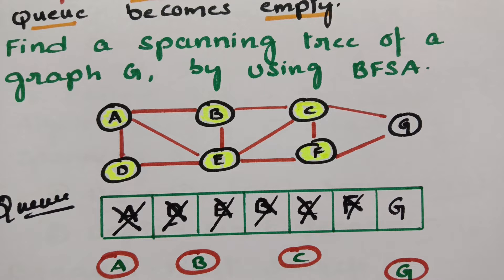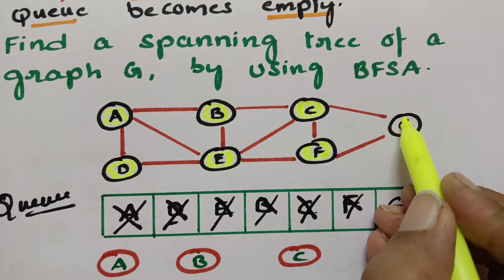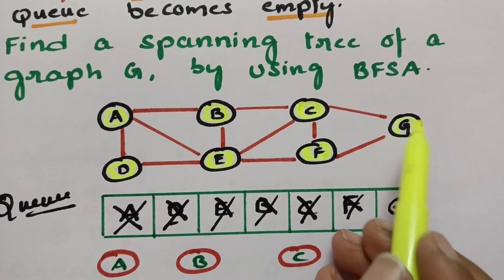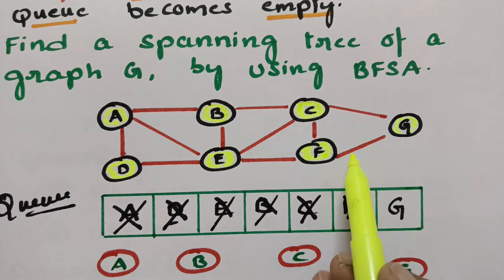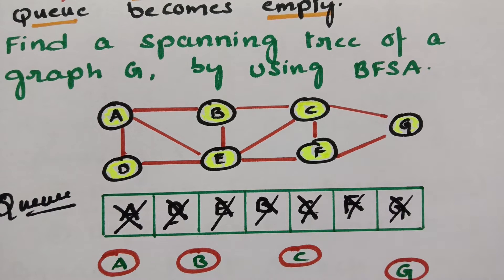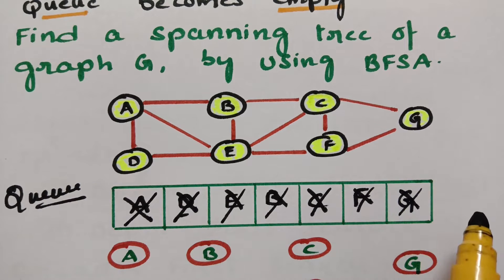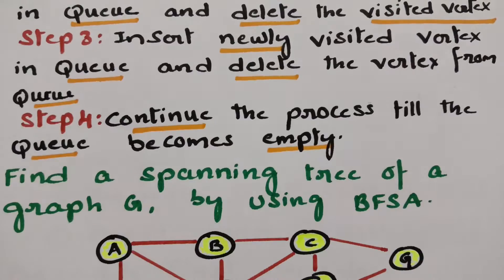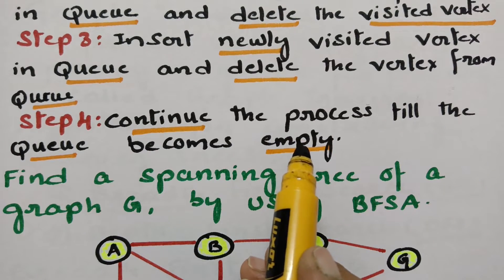The next thing is G. I have to go and visit G. After visiting G, I have to explore it — how many adjacent vertices are there? C is already posted. F is already posted. Now I have to delete G from the queue. After deleting each and every vertex from the queue, the process is completed. Continue the process till the queue becomes empty — now it is completely empty.